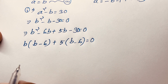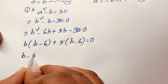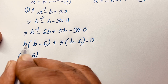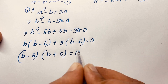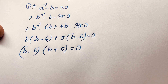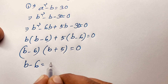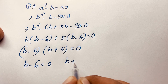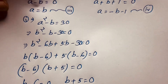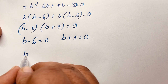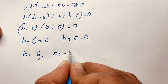Then you can say easily B minus 6 is common, so it will be B minus 6, then B plus 5 is equal to 0. Now I can say easily here are two cases: first case B minus 6 is equal to 0, second case B plus 5 is equal to 0. So B is equal to 6 and B is equal to negative 5.